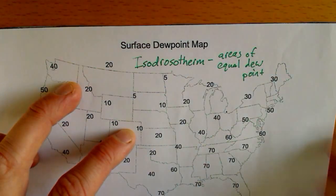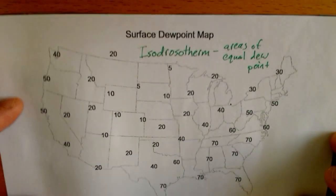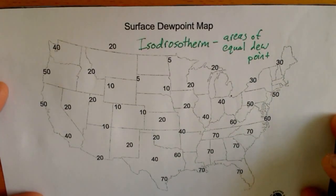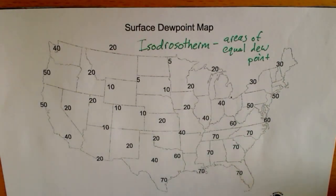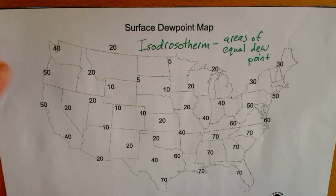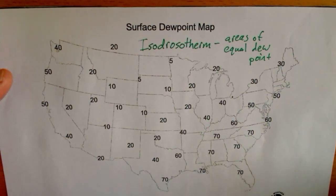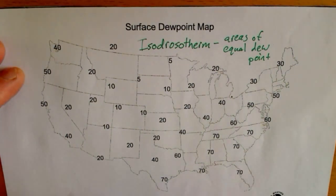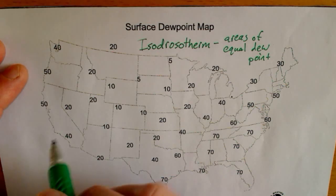So isodrosotherms — that is the technical name for it. We want to connect areas that have the same dew point. We just did the temperature, so I'm going to draw just one line and leave you to do the rest. As a recap, I want to do the 40s, so I'll start with 40 again.